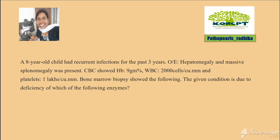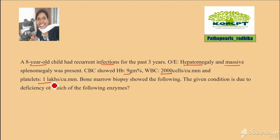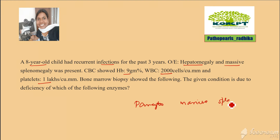Now let's summarize. You have a young child with recurrent infections. There is hepatosplenomegaly, massive splenomegaly, and you have low hemoglobin, low WBC, and low platelet. So there is pancytopenia with massive splenomegaly in a young child.